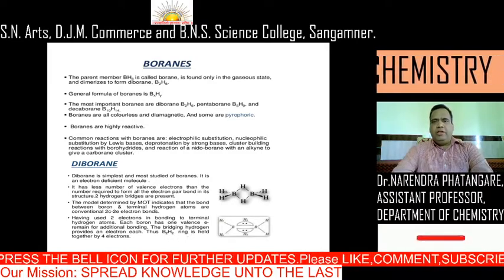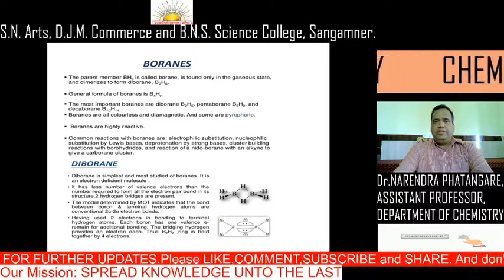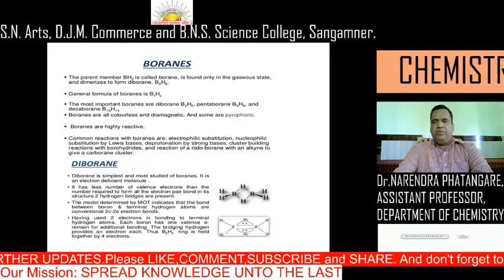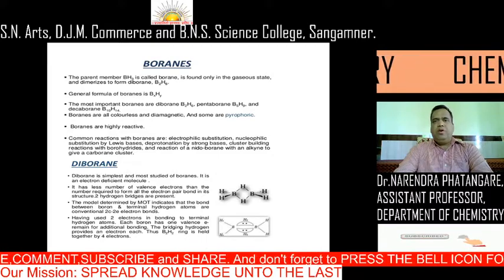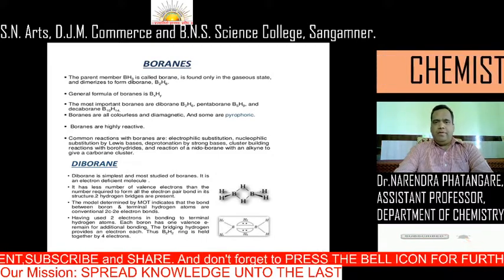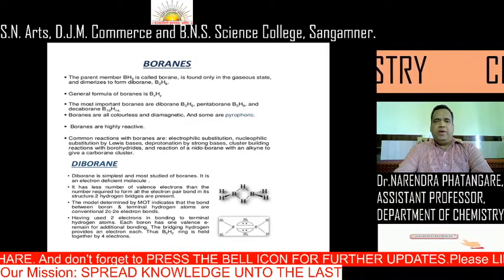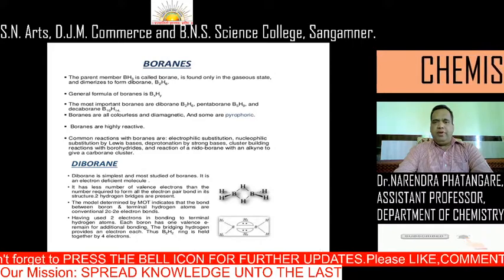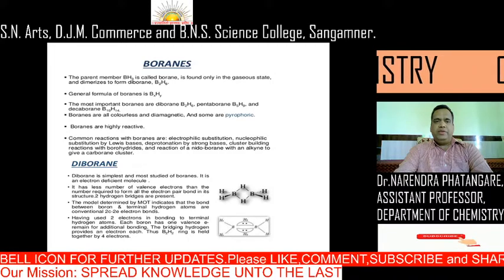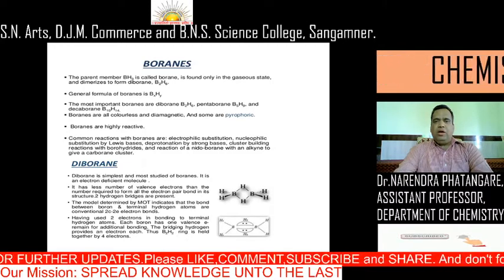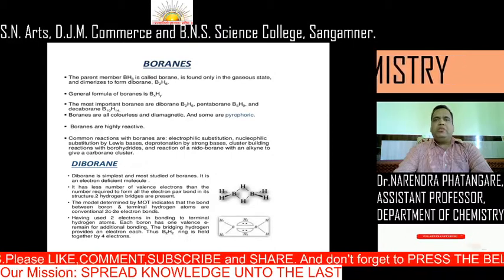Hello friends, now we are continuing with boranes. The parent member BH3 is called a borane. It is generally found only in gaseous form and dimerizes to form B2H6. It is always found in the diborane form. The general formula of borane is BxHy. The most important boranes are diborane B2H6, pentaborane B5H9, and decaborane B10H14. Boranes are all colorless and diamagnetic in nature, meaning all electrons are in bonding form.